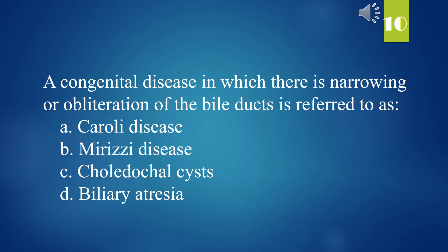A congenital disease in which there is narrowing or obliteration of the bile ducts is referred to as: A. Caroli disease. B. Mirizzi disease. C. Choledochal cysts. D. Biliary atresia. The answer is D. Biliary atresia.